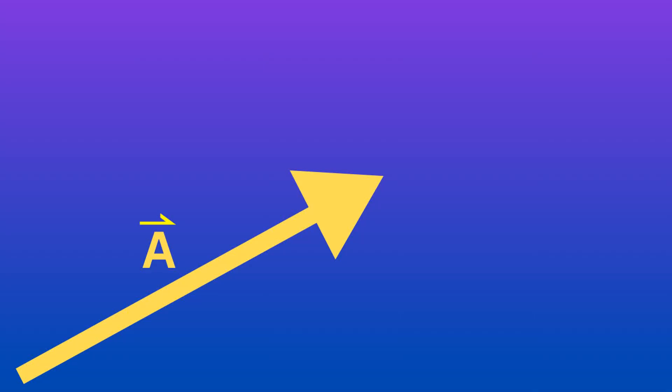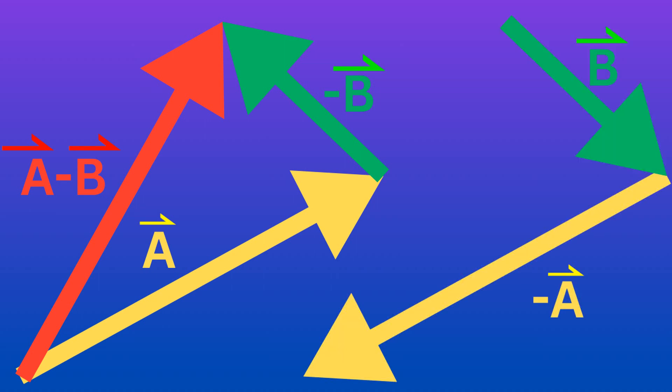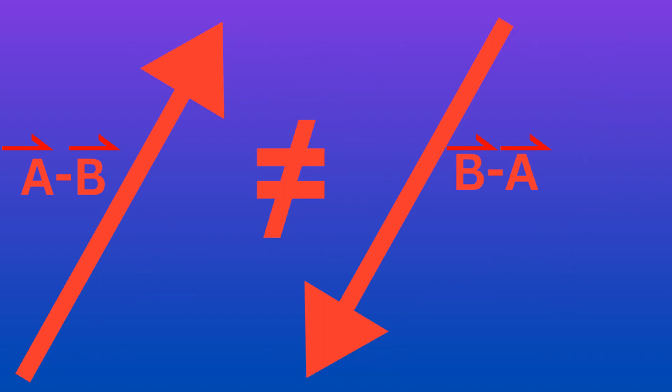However, vector subtraction is not commutative, meaning if you do vector A minus vector B, that's not the same as doing vector B minus vector A. You would end up getting a different resultant vector with those two scenarios. So vector subtraction is not commutative — you have to have them in the correct order to get the same result.